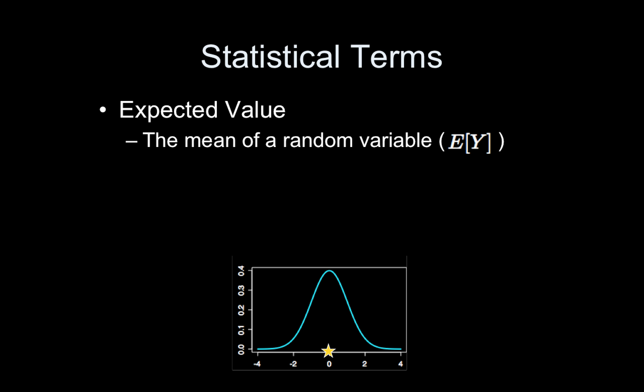The expected value is the mean of a random variable. So if I say expected value, or if I ever use this E of and then put a random variable in there, I'm referring to the mean. So the mean of the distribution is typically, well in this case it's the center because it's a symmetric distribution.